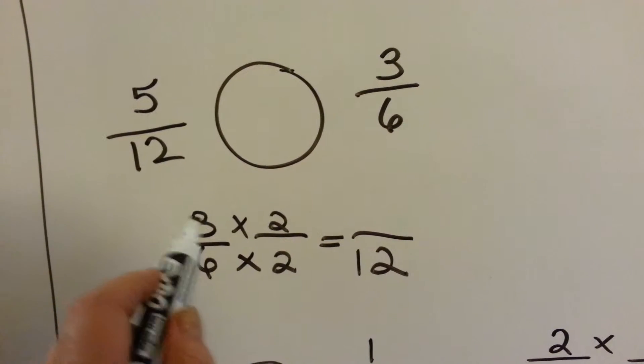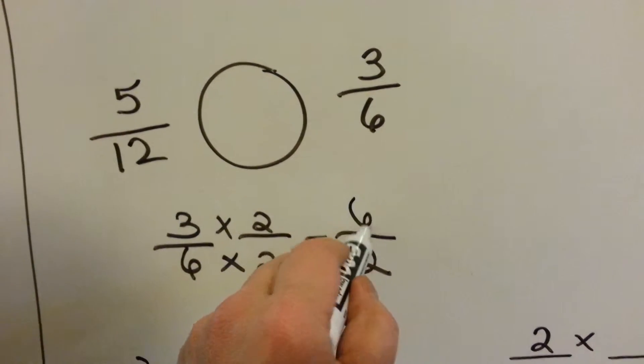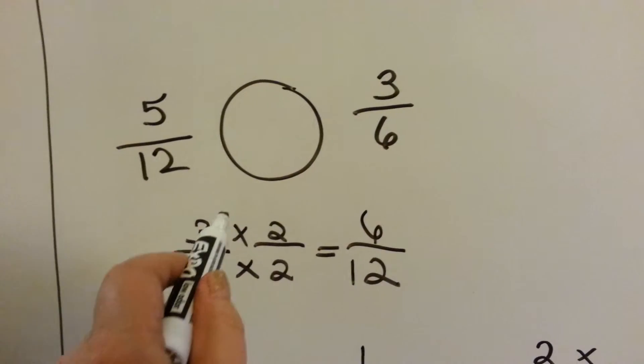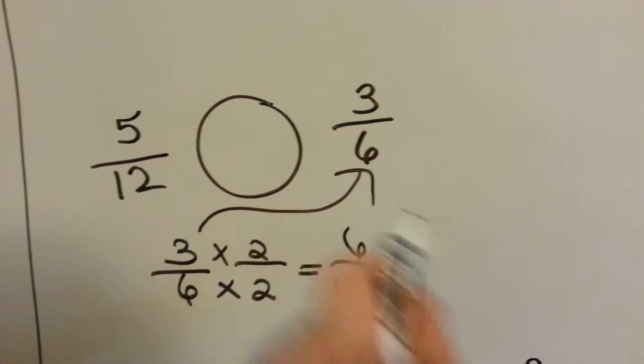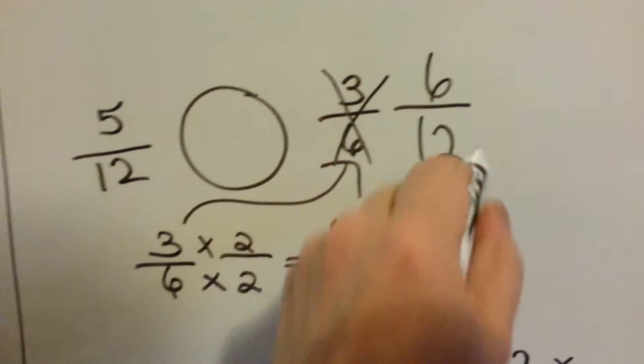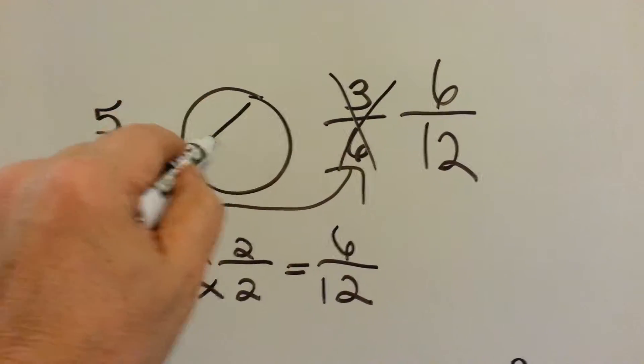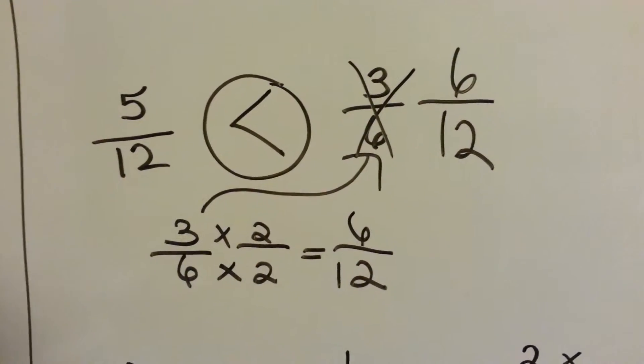The numerator gets jealous. He wants to be multiplied by 2 also. 3 times 2 is 6. So the 3 sixths is not a 3 sixths anymore. He becomes a 6 twelfths. Now, can you see which one's bigger? Yeah, the 6 twelfths. The 3 sixths was bigger.